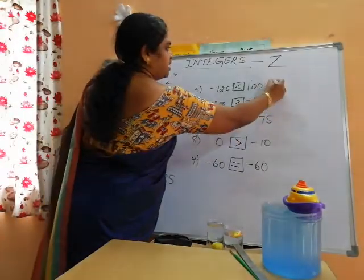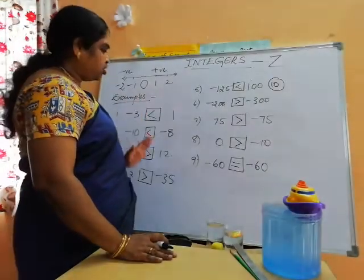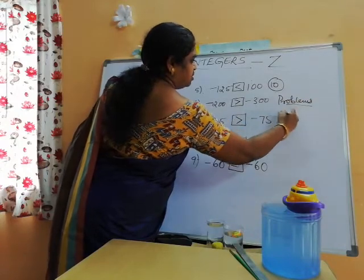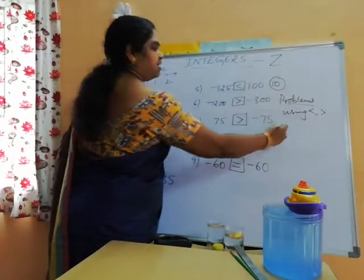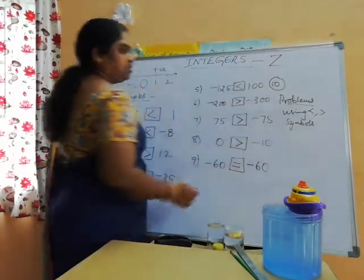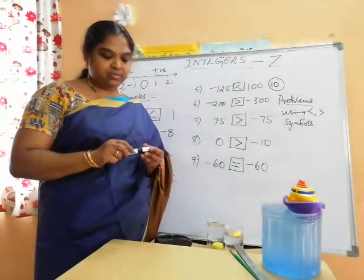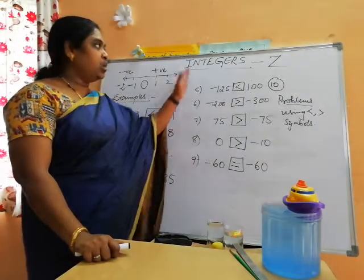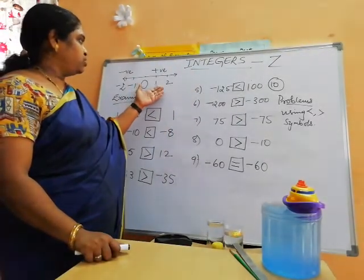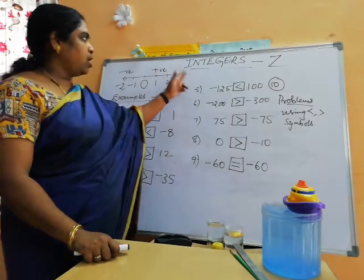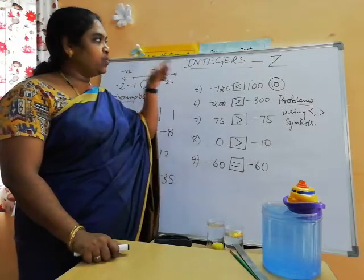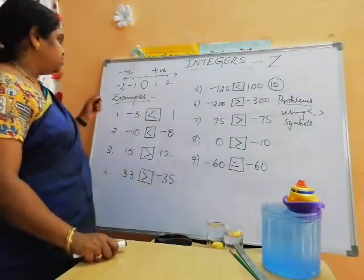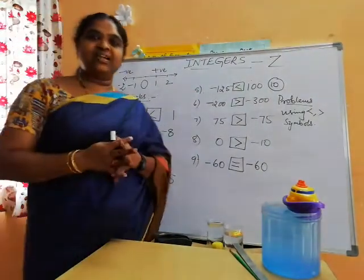Will you try ten more problems of your own choice using less than and greater than symbols? Okay children, hope you are following. This is the new topic for sixth class children. Today we learned what are integers — positive numbers, negative numbers along with zero are called integers. The stress letter is pronounced as Z, that's why the symbol of integers is Z. Hope you are following Sheila teacher's class. Thank you.